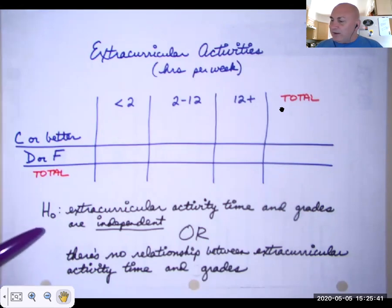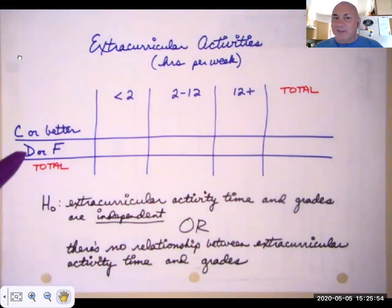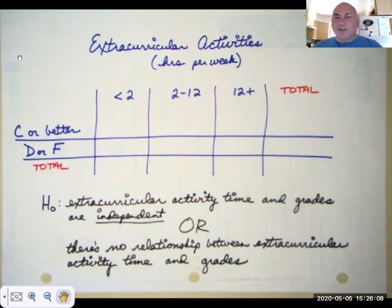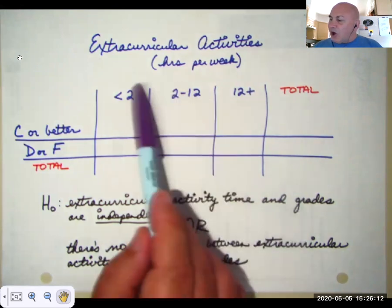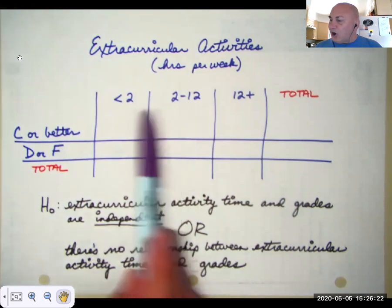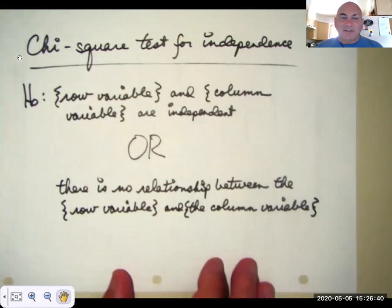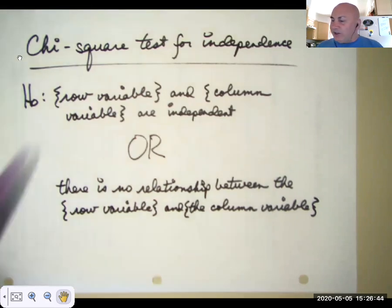There are two ways to write the null. One is that the two variables are independent, or there's no relationship between them. So in the goodness of fit test, the null hypothesis was always the same: the given distribution is correct. Here, the format is either that the column variables and the row variables are independent, or there's no relationship between them. It's important to state what those variables are. You just fill in what the row and column variables are.